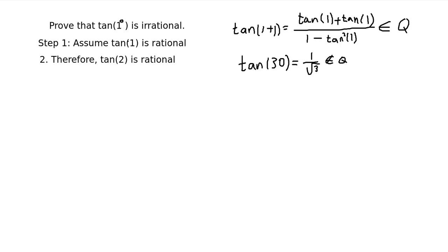And so, what we want is a contradiction. So if we can show that, if we can continue this process until we somehow claim that tangent of 30 degrees is rational, then we know we'll have reached our contradiction, and therefore our assumption was wrong.